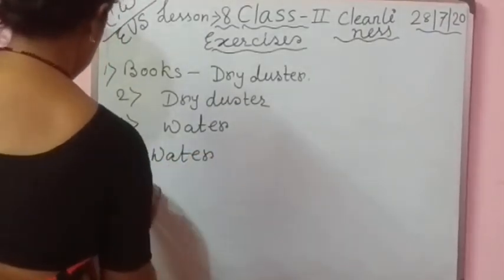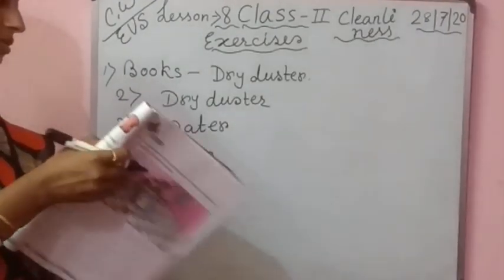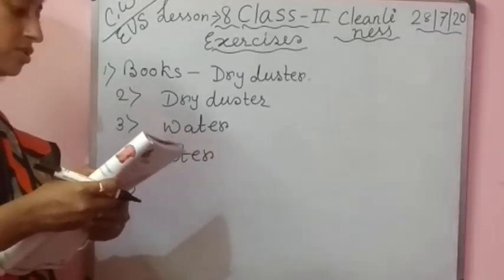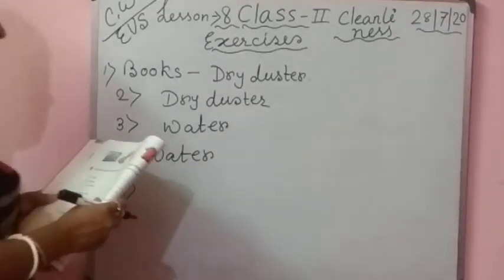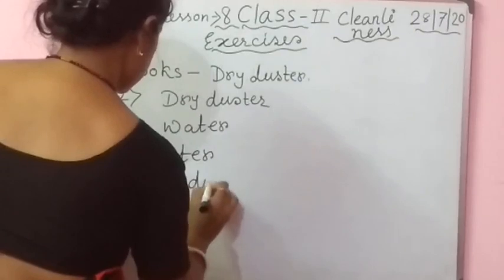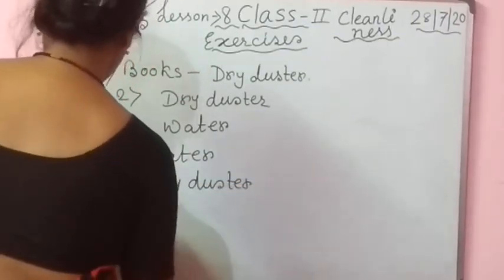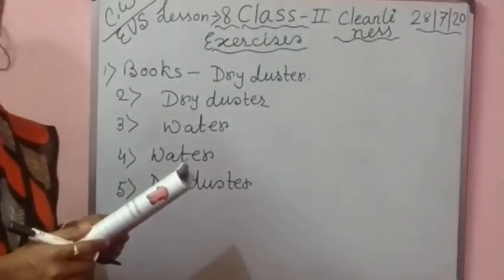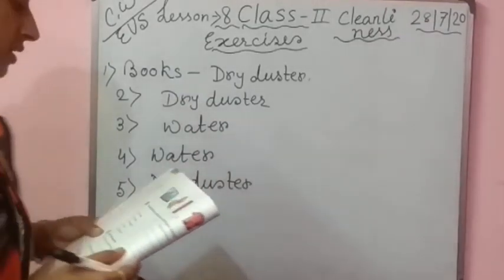Number five: also cleaned with water. Number six: also cleaned with water — this one, one drop, comes with water.